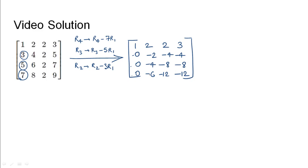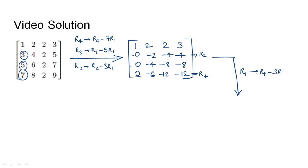We can see that row 4 is nothing but three times row 2. So if we subtract three times R2 from R4, that makes the last row all zeros. Performing this elementary transformation: R4 = R4 − 3R2.